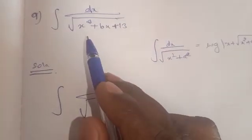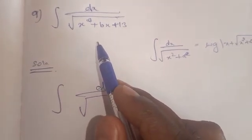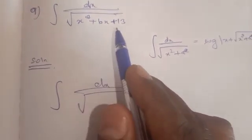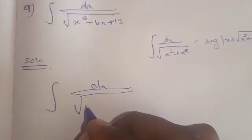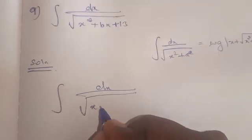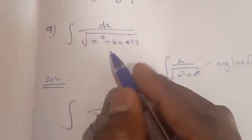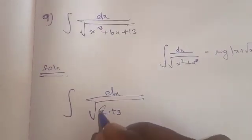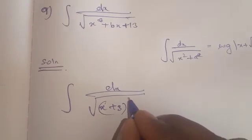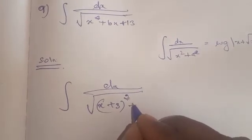So, completing the square. Using the (a plus b) whole square or (a minus b) whole square formula. So x squared, x term — take the coefficient of x, divide by 2, giving us 3. So x plus 3, the whole square plus...